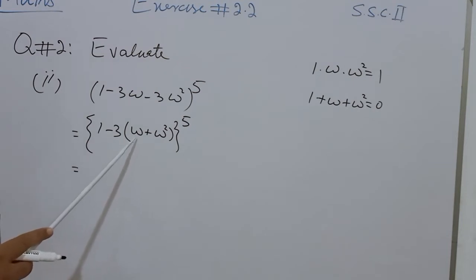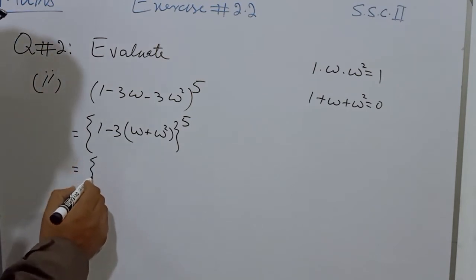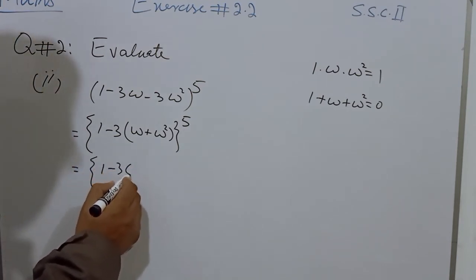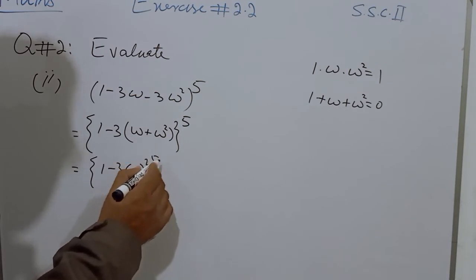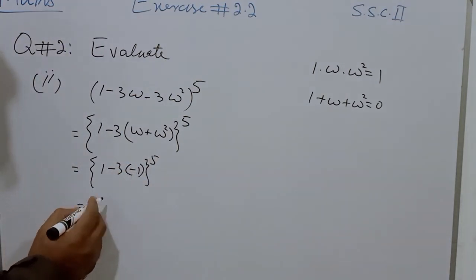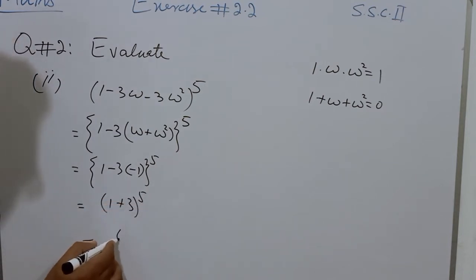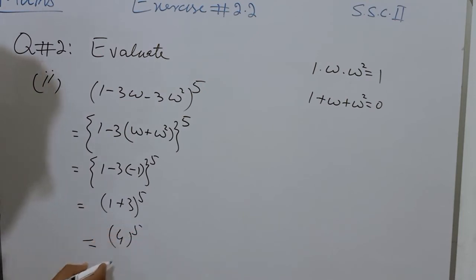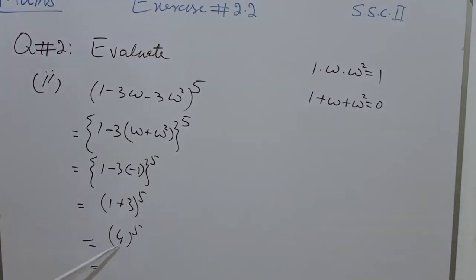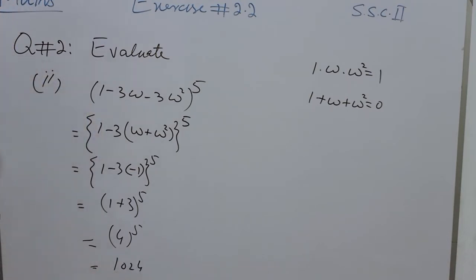We put minus 1 in place of omega plus omega squared and it becomes (1 minus 3 times (minus 1)) to the power of 5. Minus 3 and minus 1 are multiplying, so it becomes plus 3. Therefore (1 plus 3) to the power of 5 means 4 to the power of 5. Using a calculator, 4 to the power of 5 means 1024, and we have simplified this part.